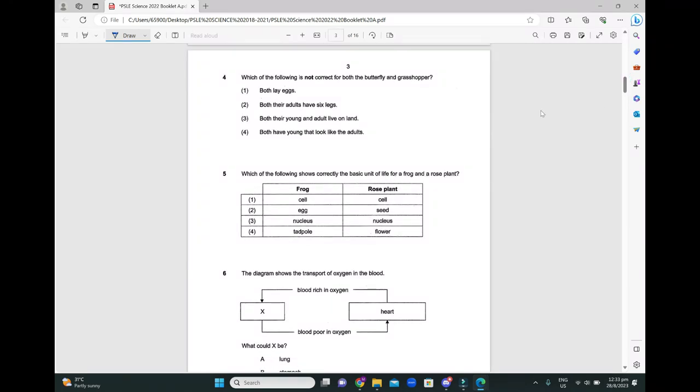Next one. Which of the following is not correct for both the butterfly and the grasshopper? Both lay eggs, that is true. Both the adults have six legs, they are both insects, that's true. Both the young and adult live on land, that is also true. Both have young that look like adults. Now this is false. The grasshopper is a three-stage insect, but the butterfly is four-stage. Most four-stage insects actually have a larva and a pupa stage. At this stage, they do not look like their adults. But the grasshopper's young is a three-stage life cycle. The three-stage life cycle, the young is called a nymph. And a nymph will look like the adult. So the answer is number four.